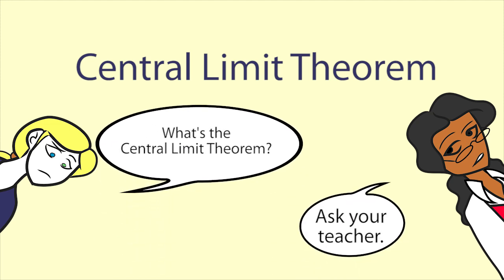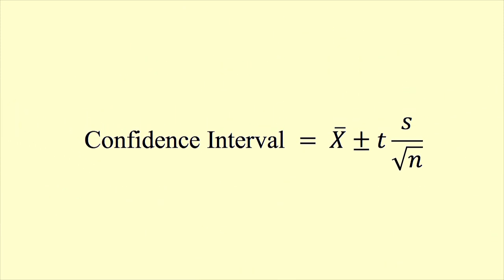The central limit theorem underpins the following formula for the confidence interval of a mean. We take the sample standard deviation and divide by the square root of the sample size. This gives us the standard error.